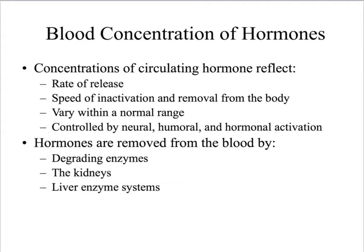You would go out of balance, so eventually the insulin that was there needs to be gotten rid of. Hormone levels should vary within a normal range and are controlled by neural activity from the brain, humeral activity from the body, and hormonal activity — hormones can affect the release and activity of other hormones. Hormones are removed from the blood by degrading enzymes, the kidneys, or certain liver enzymes.